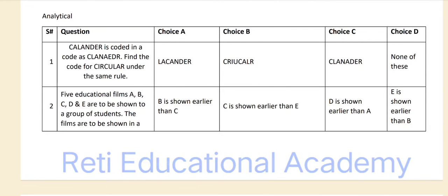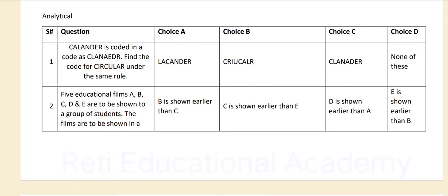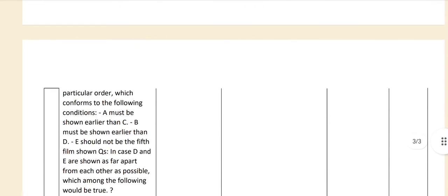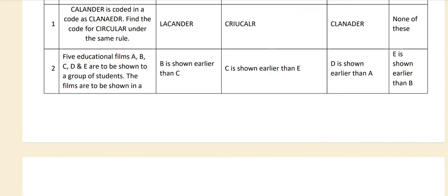Question number two: five educational films A, B, C, D and E are to be shown to a group of students in a particular order confirming the following conditions — A must be shown earlier than C, B must be shown earlier than D, E should not be the fifth film shown. In case D and E are shown as far apart from each other as possible, which of the following would be true? The correct answer is A — D is shown earlier than A.